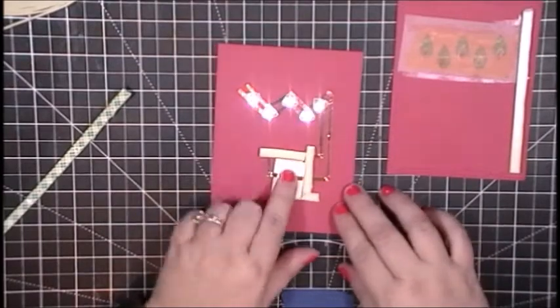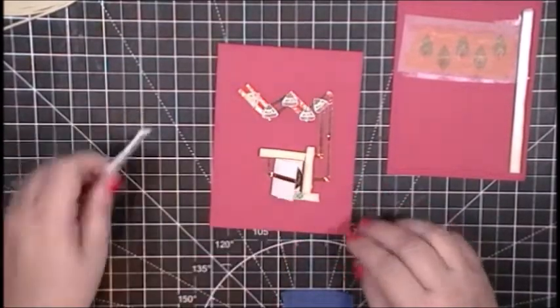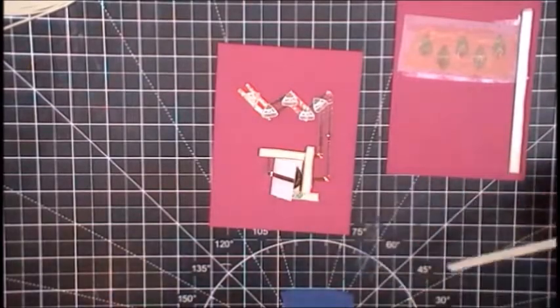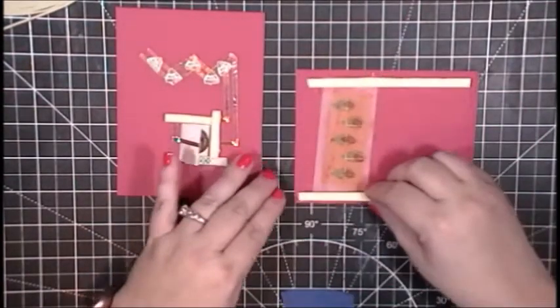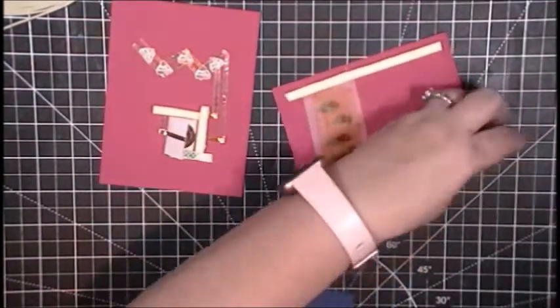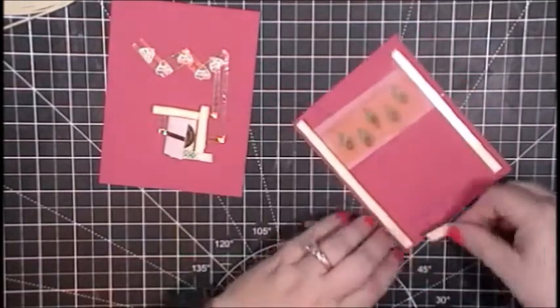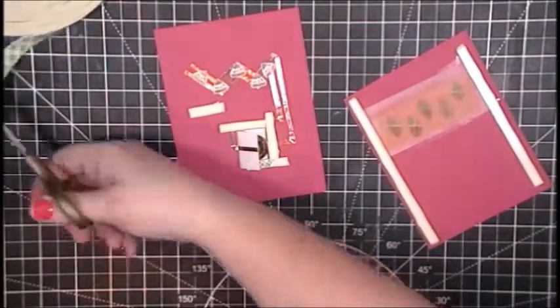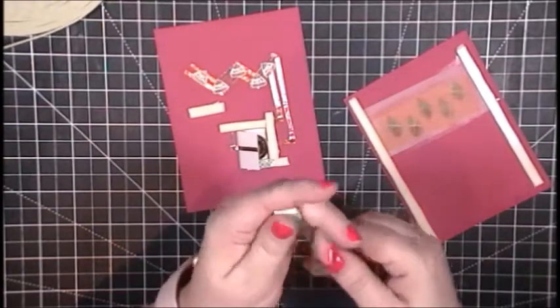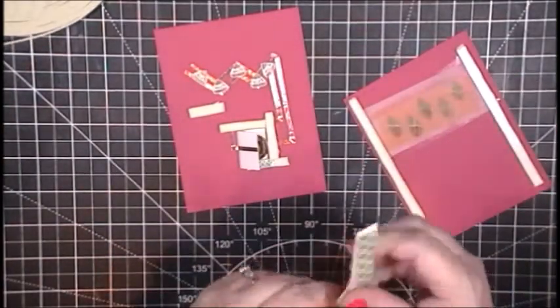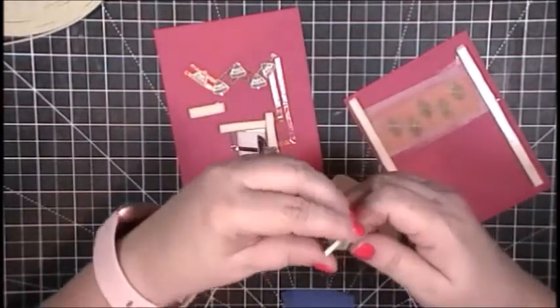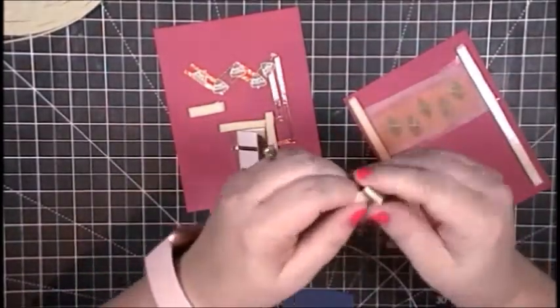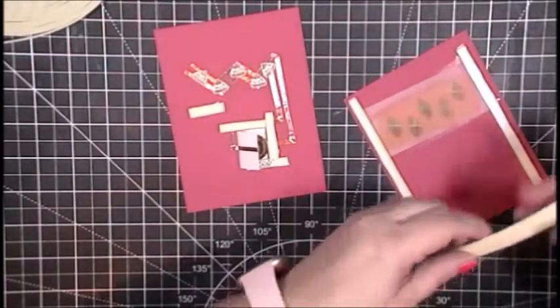Once the copper tape is down, you can put adhesive over the top of it and it does not interfere with the circuit. So I'm not worried about covering up the copper tape with my foam tape walls. And again, this is a double layer of foam tape.